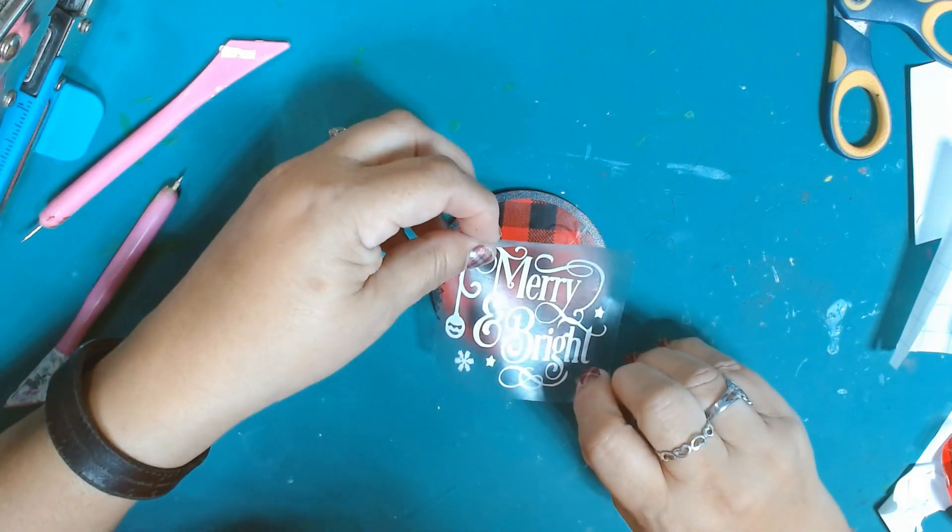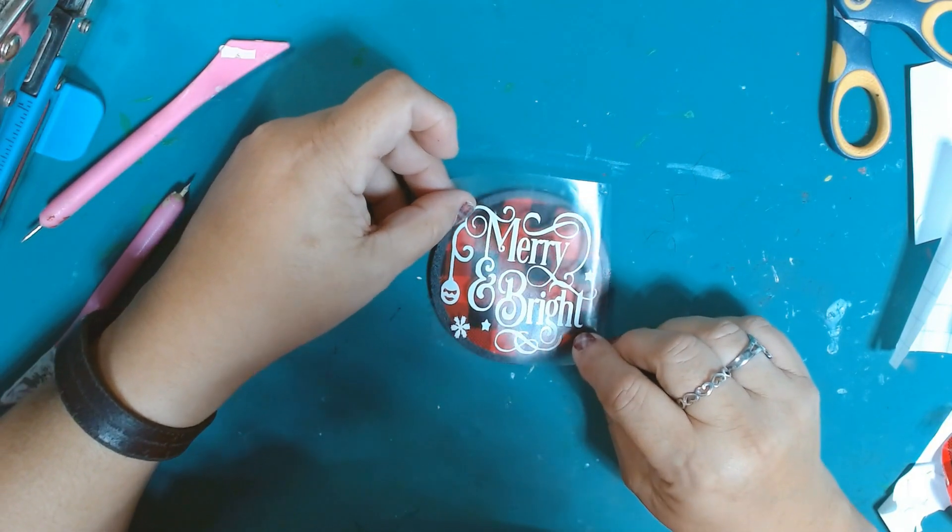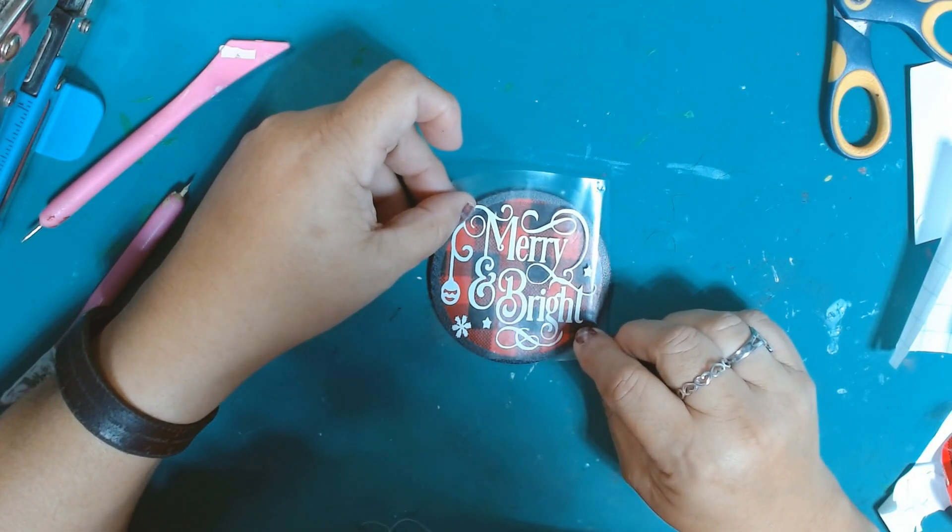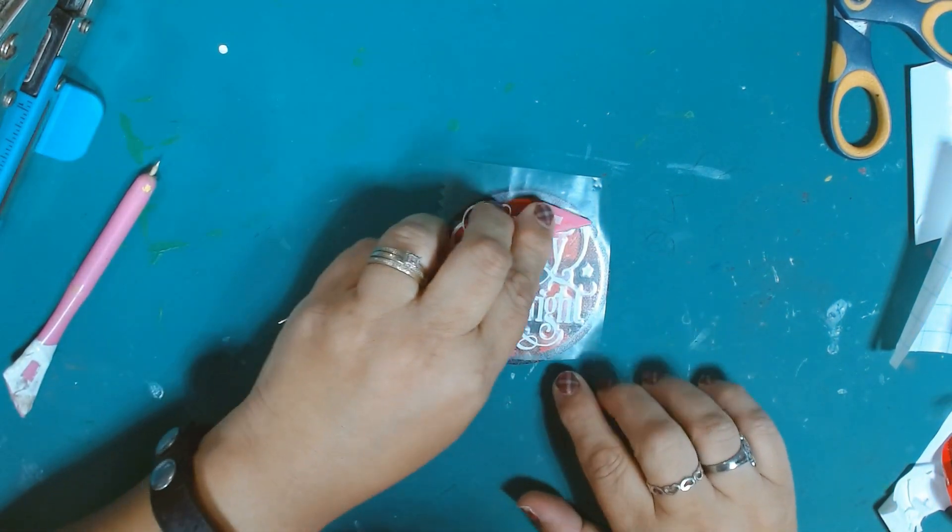I'm using the clear Dollar Tree contact paper to transfer the vinyl onto the ornament, and it works pretty well for me.